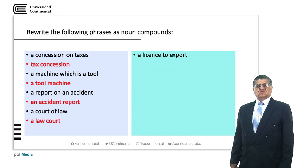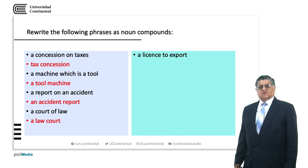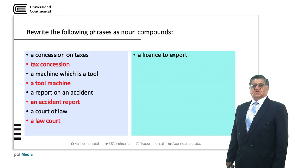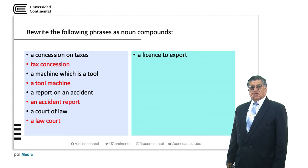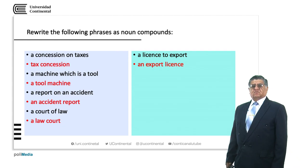A license to export — when you need to export, one of the first things you have to do is apply for a license. So in compound noun form, we have 'an export license'. In plural, 'export licenses'.